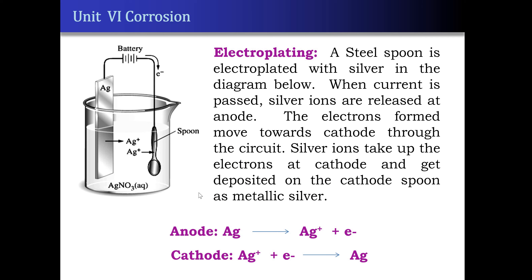Let us see an example of coating of silver on a steel spoon. Here, we can see that silver is made as anode and the steel spoon is made as cathode. When current is flowing, silver is dissolved into silver ions and electrons move towards the cathode. These silver ions take up the electrons and form metallic silver at the spoon — that is the cathode. Therefore, this spoon gets coated with silver. From inside it is steel but from outside it will be silver.